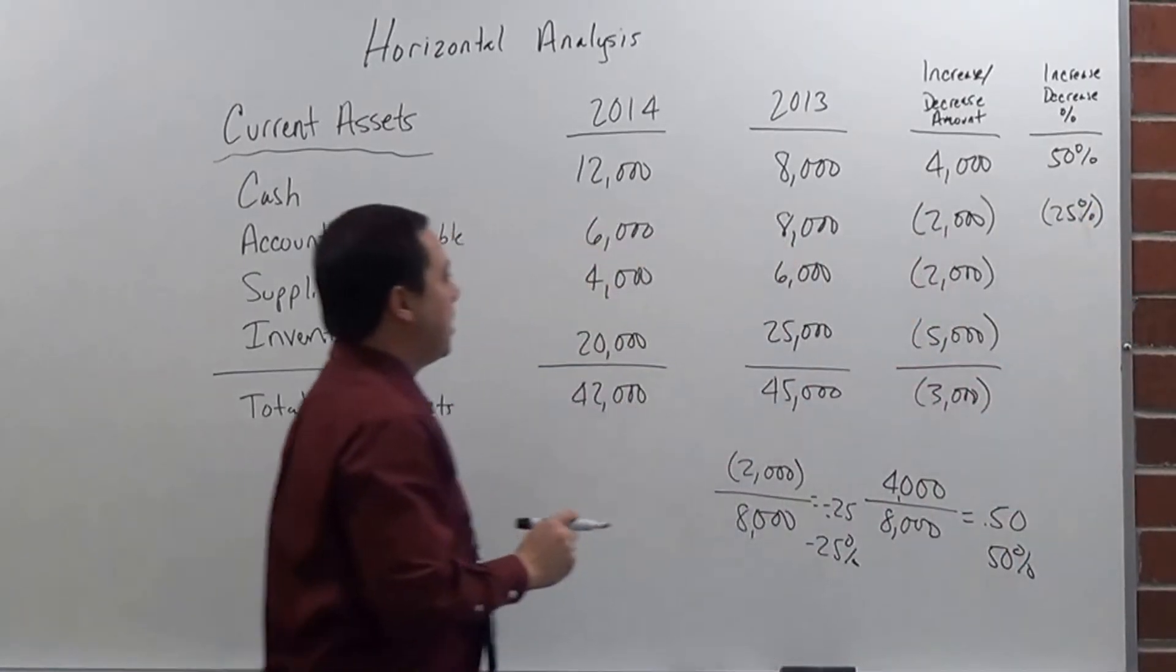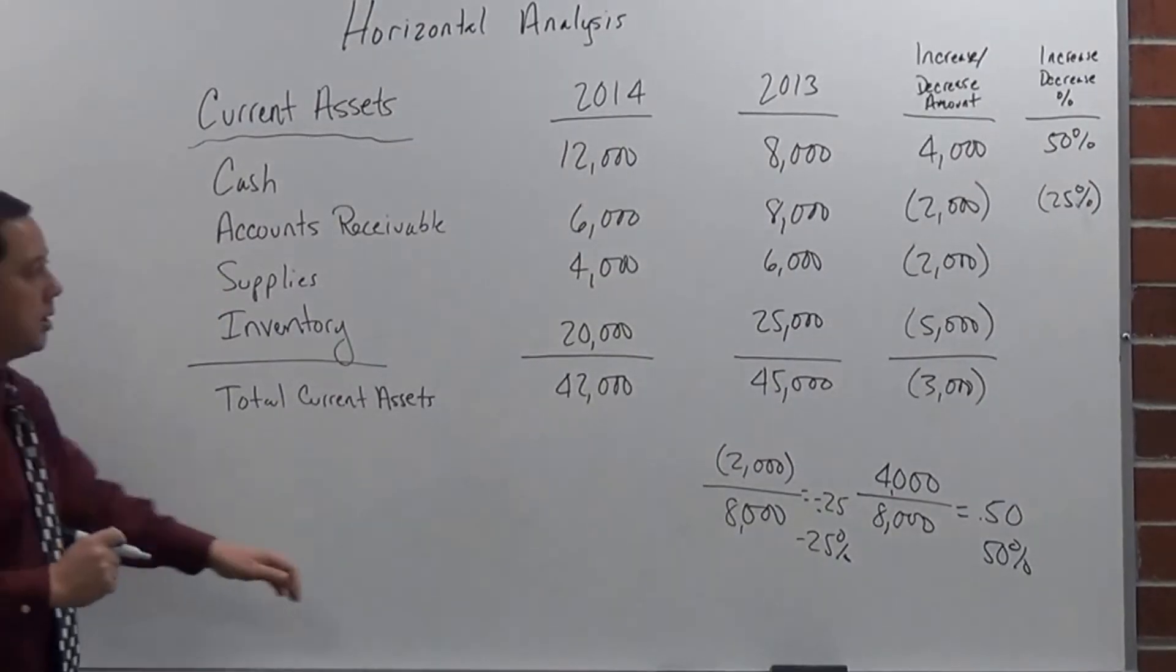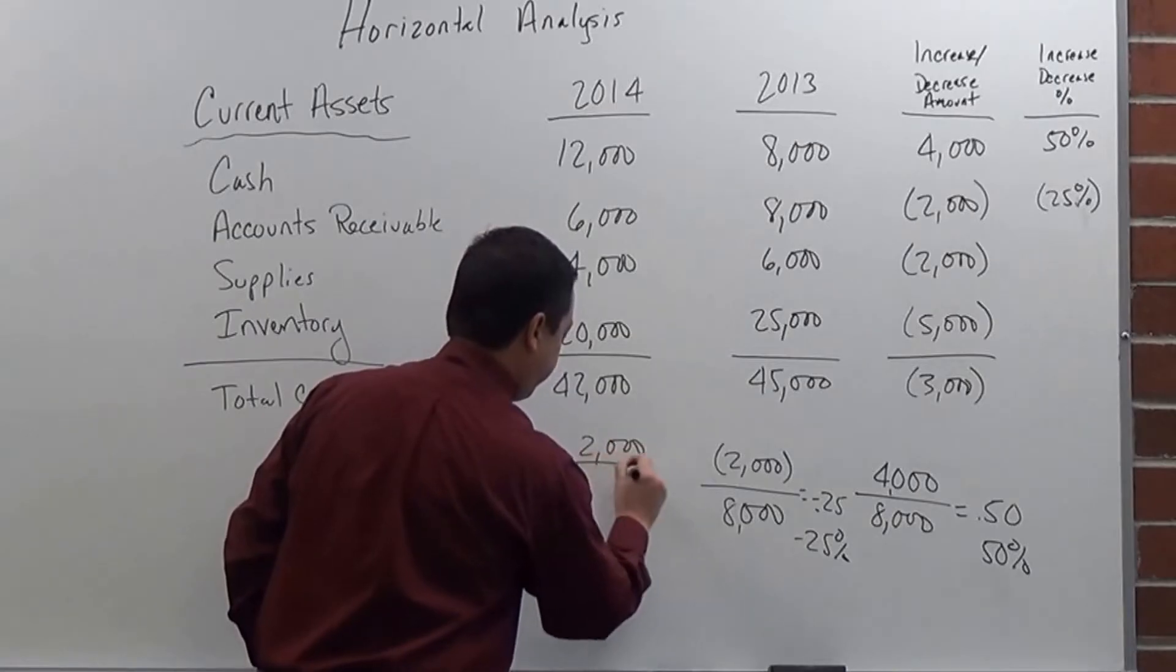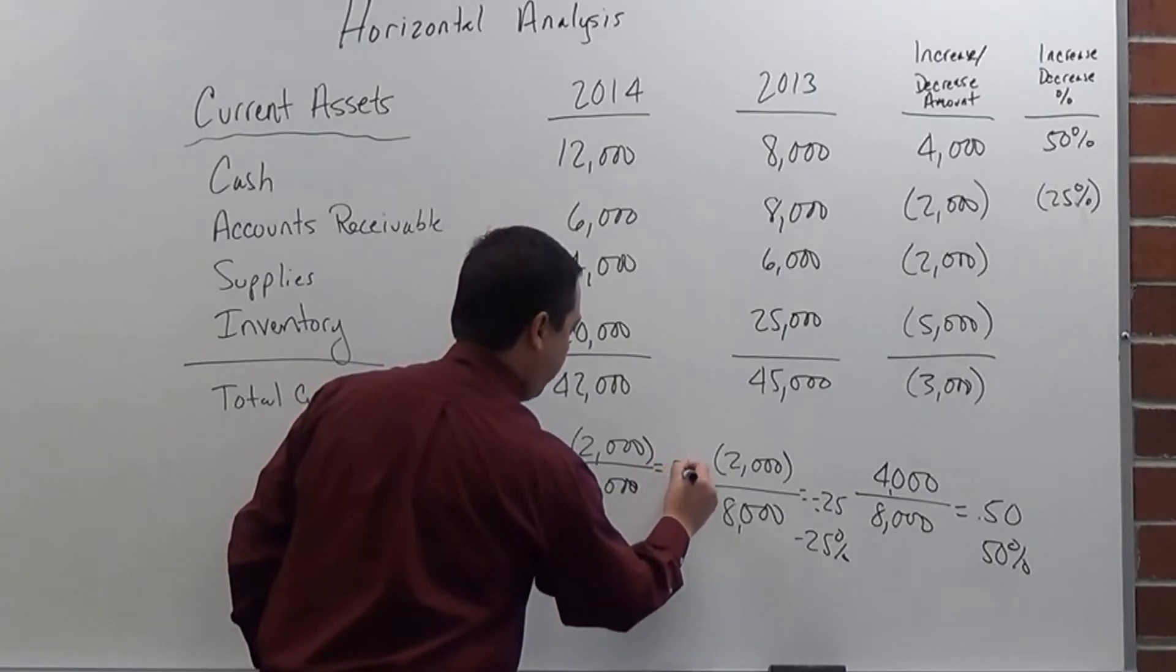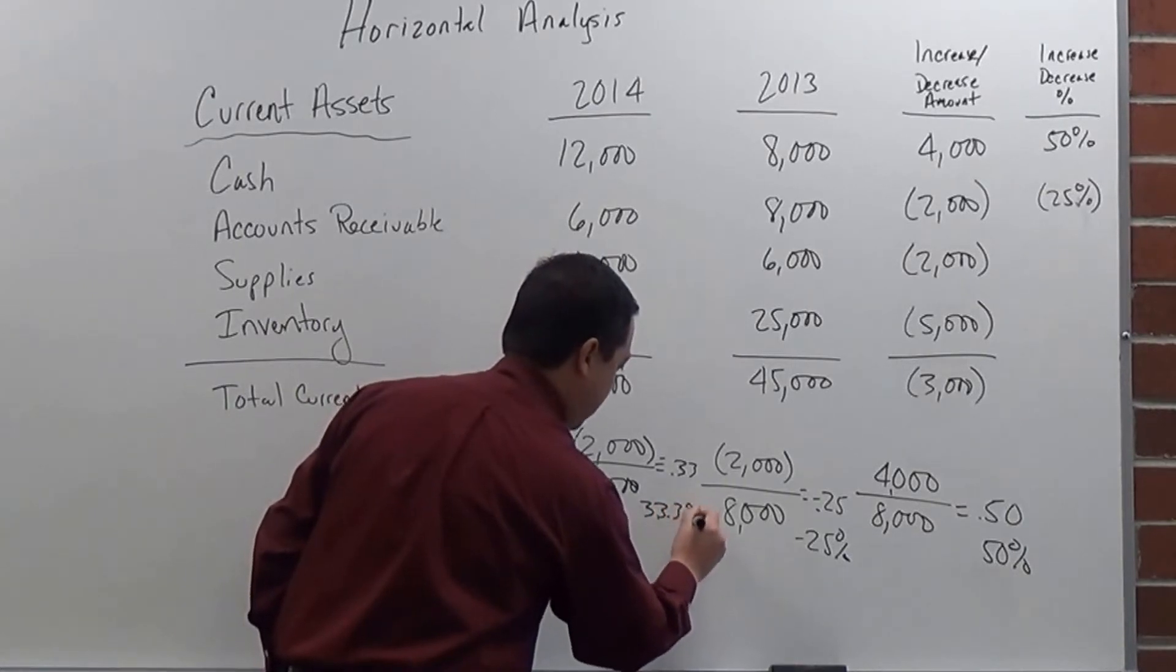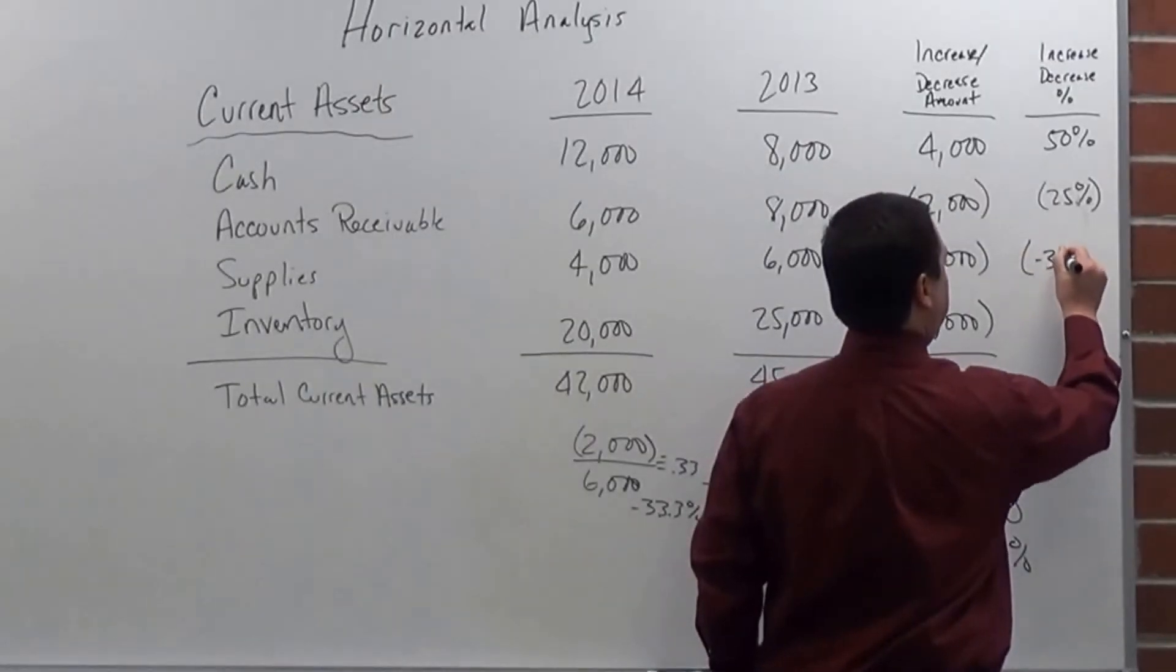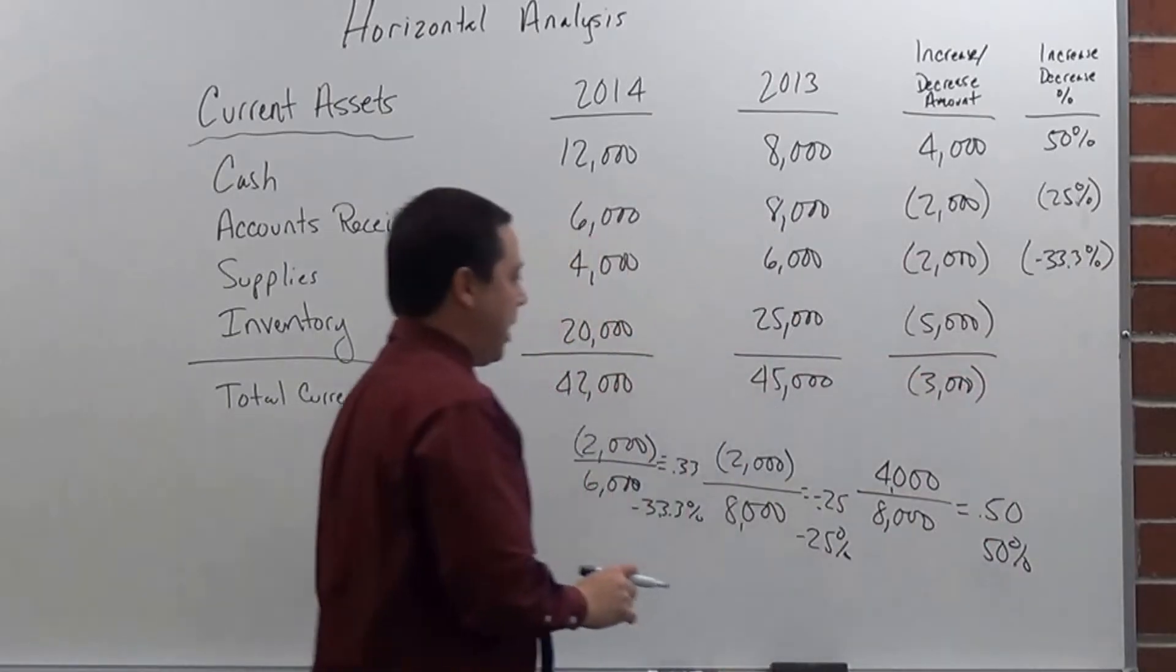All right, and so here, on this one, for my supplies, I have a $2,000 decrease once again, but it's over the $6,000. So that gives me .33, which is 33.3%, and that's a decrease. So I will have a negative 33.3%, and that's a decrease there.